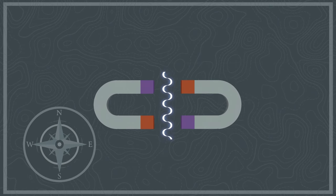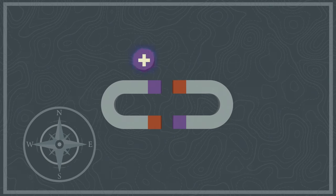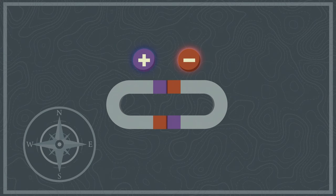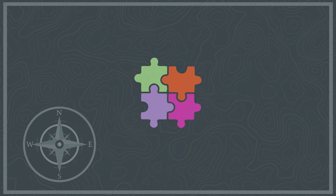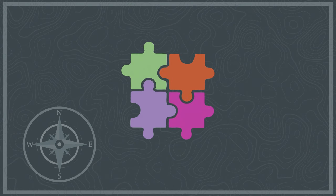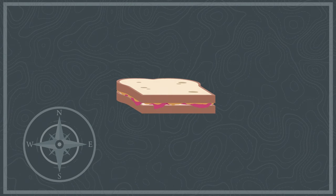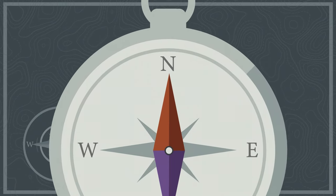Two magnets will try to attach to each other. The positive and negative sides will go together, just like jelly and peanut butter or puzzle pieces do. They naturally go together, connecting the two.